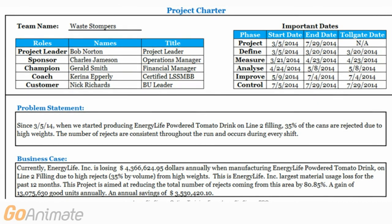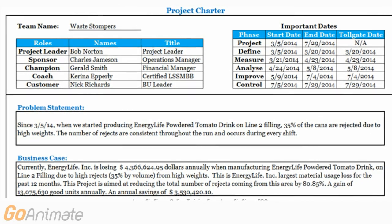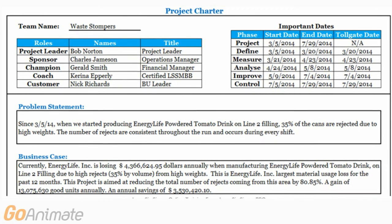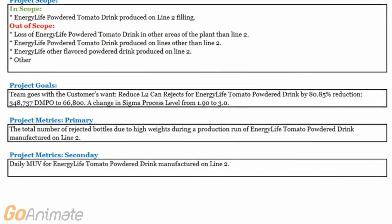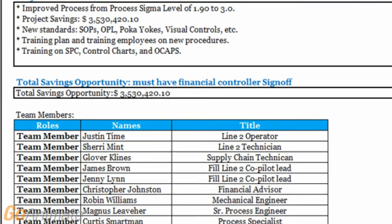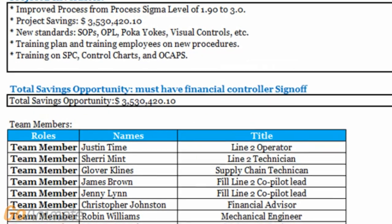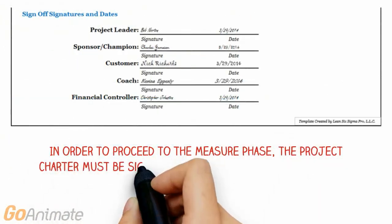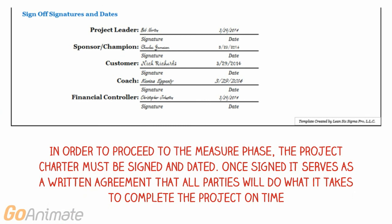The main deliverable of the Define Phase is the Project Charter, which serves as a contract between the team and management. It consists of a problem statement, business case, toll gates, project scope, project goals, primary and secondary metrics, project deliverables, total savings opportunity, and team members. Prior to moving to the Measure Phase, the project charter should be signed off by the project leader, financial controller, champion, and process owner. This seals the agreement.